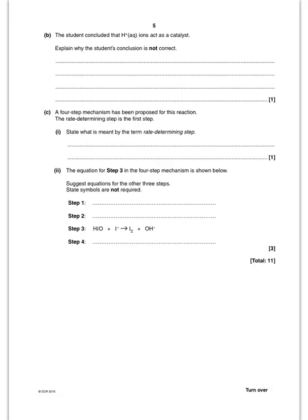The student thinks that H+ acts as a catalyst — why is that not correct? If you look at the equation, H+ ions are actually used up; they occur in the equation. Remember, a catalyst is not used up, whereas H+ clearly occurs in the overall equation and is used up, so they are not a catalyst. What is meant by the rate determining step? It is the slowest step in the reaction.